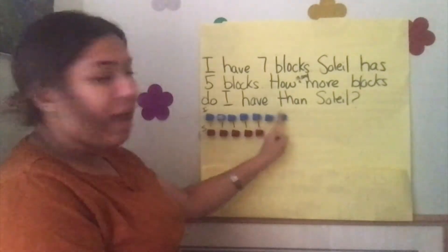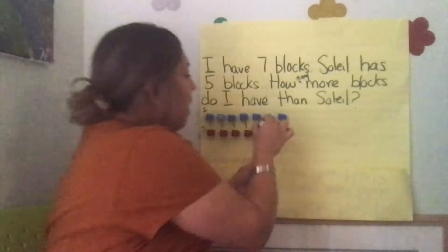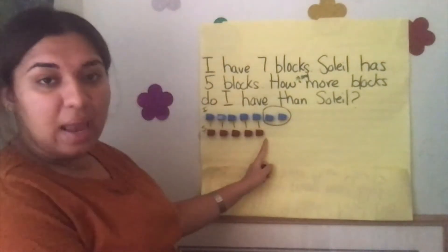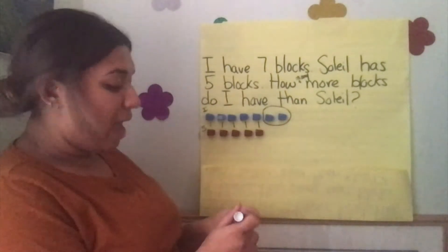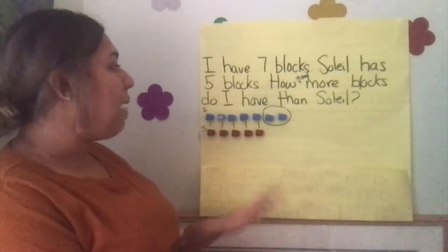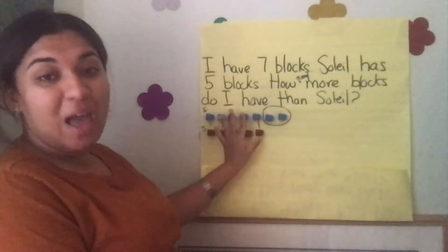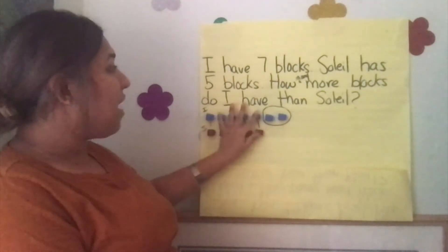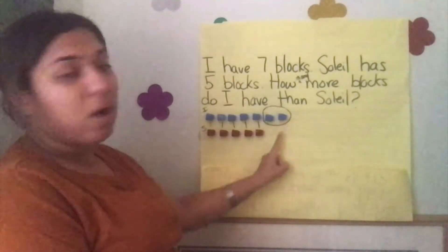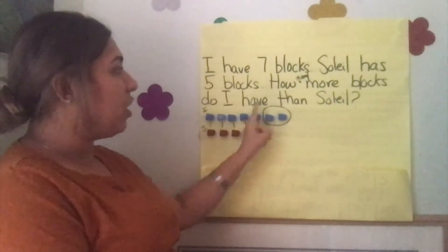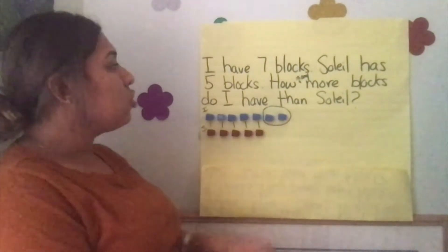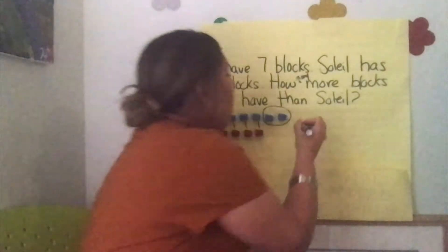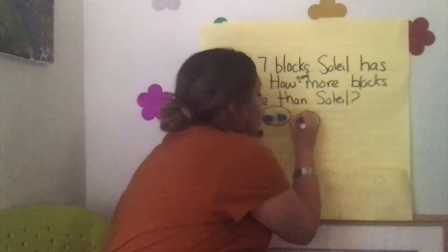How many more do I have than Soleil? I have two more than Soleil. When we're thinking about a how-many-more problem, we need to think about what we have that's the same and what we have that's more. Both of us have the five blocks. What I have more is two more over here. So I have two more than Soleil.